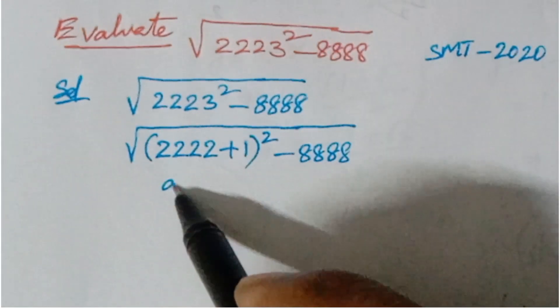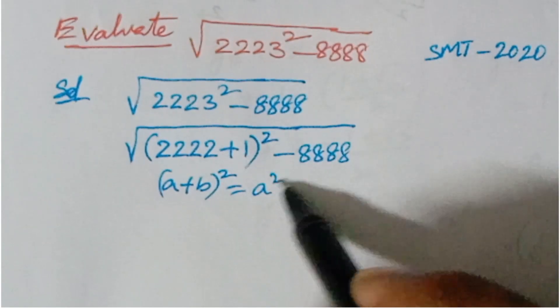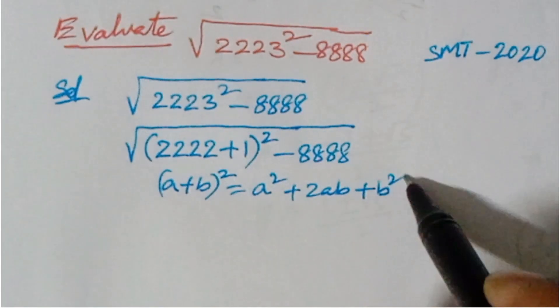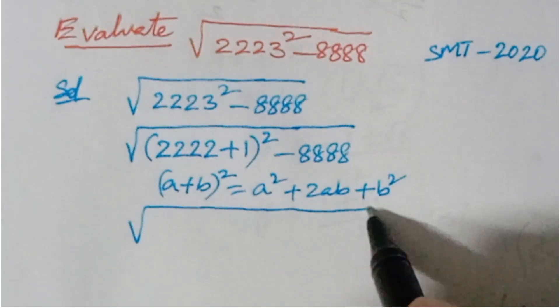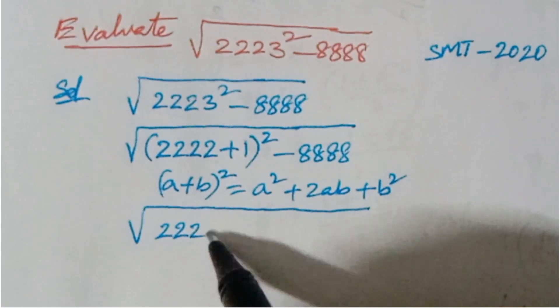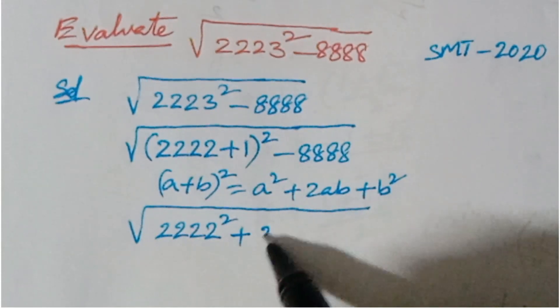Now here we will apply a plus b whole square formula. So here a squared plus 2ab plus b squared, this formula you have to apply.